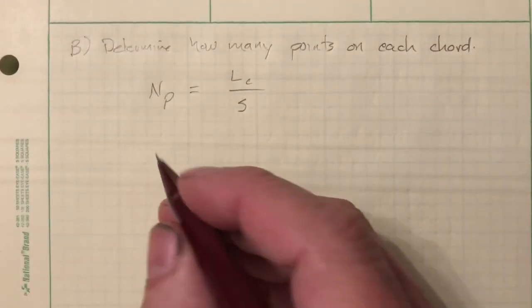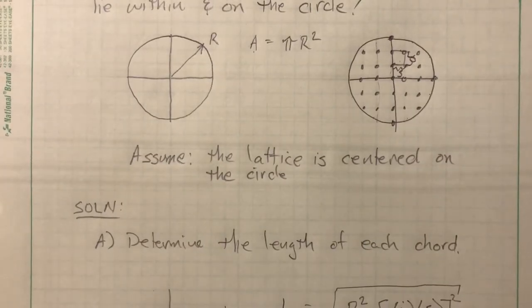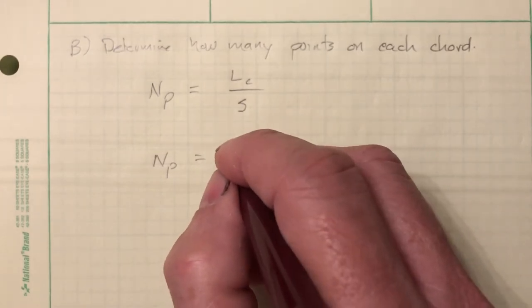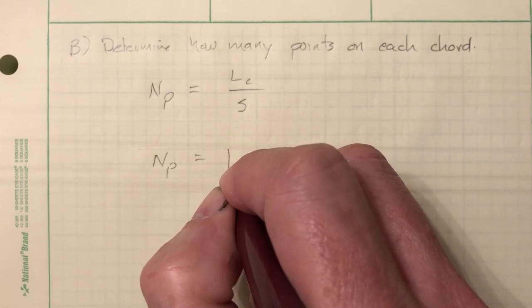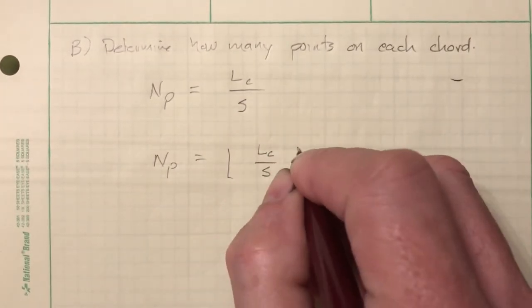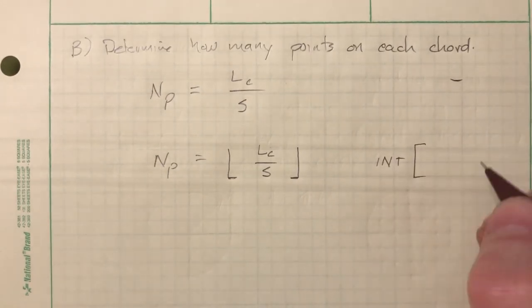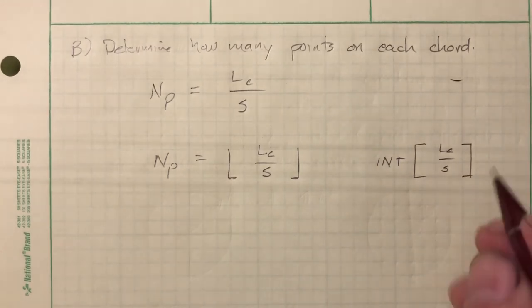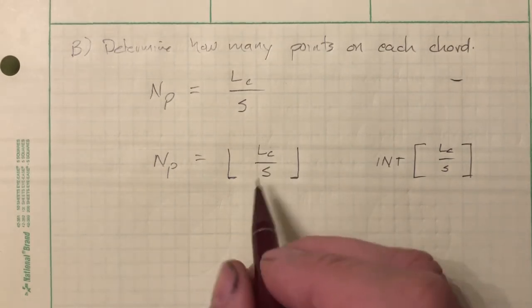We handle the remainder using the floor function. The number of points equals the floor of (chord length divided by S). The floor notation uses brackets only on the bottom and rounds down to the nearest integer — equivalent to the INT function in spreadsheets or programming. So: number of points = floor(L_C / S).